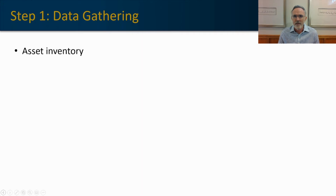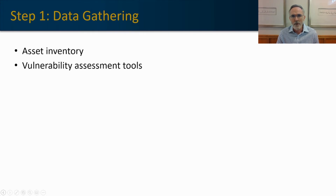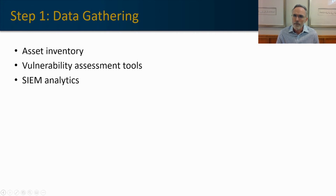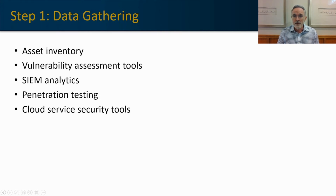So what does data gathering look like? We're going to take an asset inventory. We're going to run a vulnerability assessment tool — that may be an automated tool, or you might have a third party come in and do a vulnerability assessment. It may be something that comes out of your SIEM, which will also have analytics to help you identify data and the sources of threats coming into the organization. You might do your own penetration test or bring in a third party to identify pockets of exposure both internally and externally. And then you're going to want to look at your cloud service security tools as well — as our cloud services begin to grow, we want to incorporate those tools into our risk assessment.